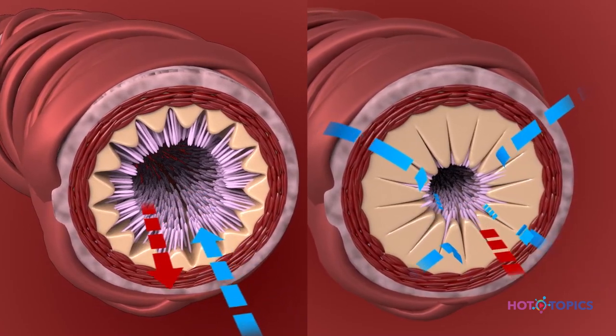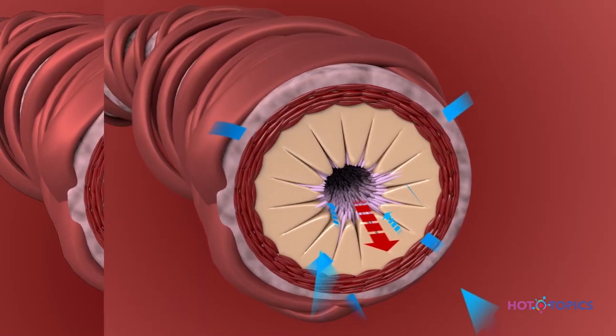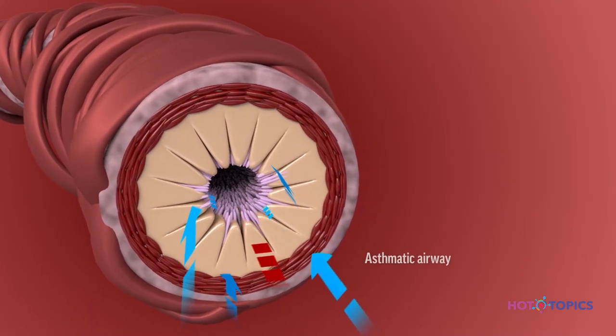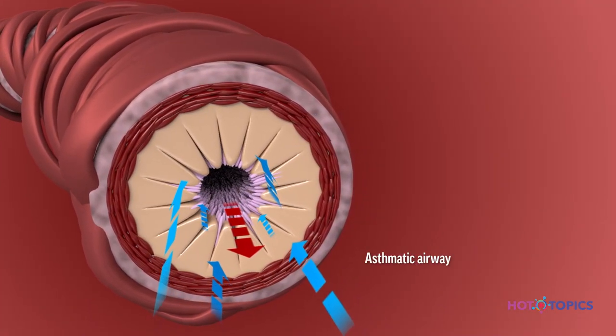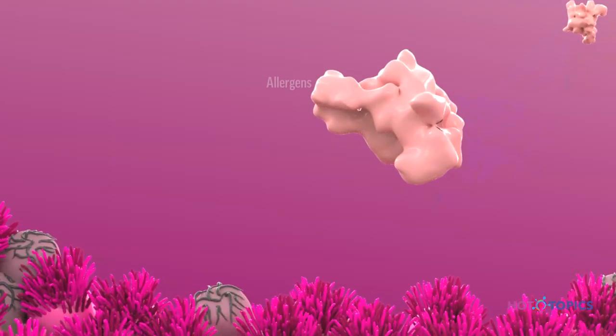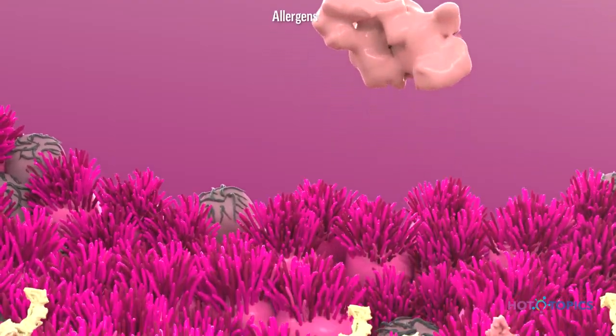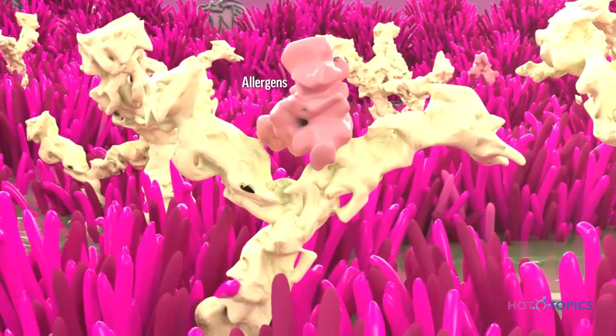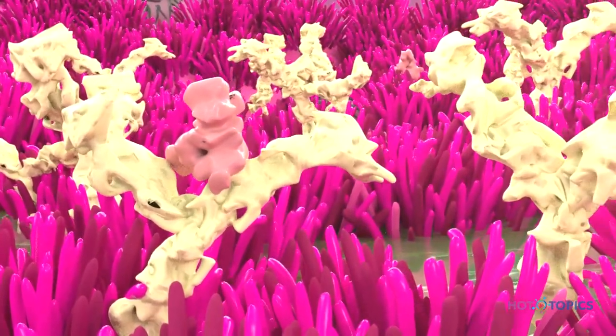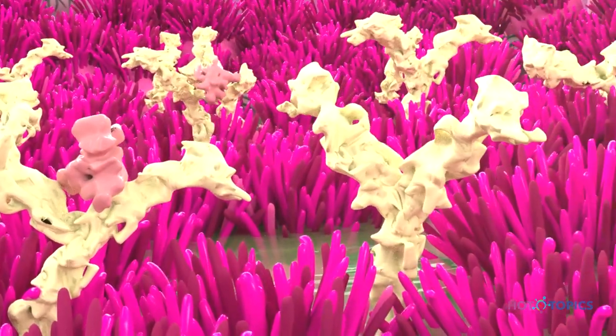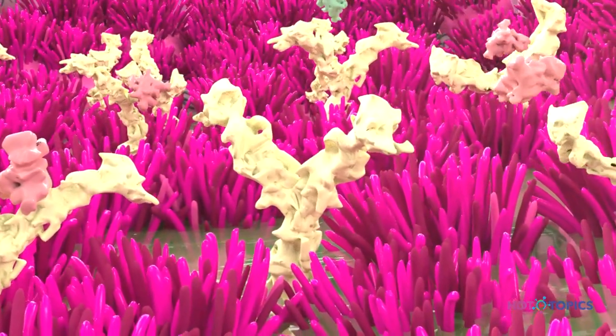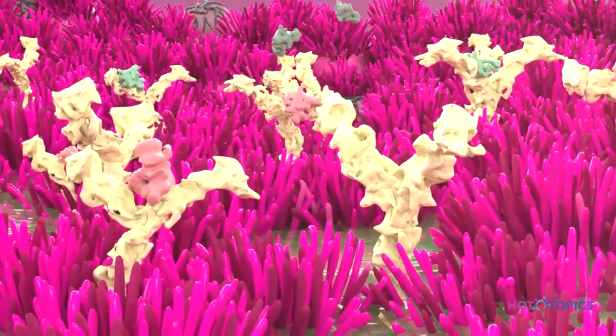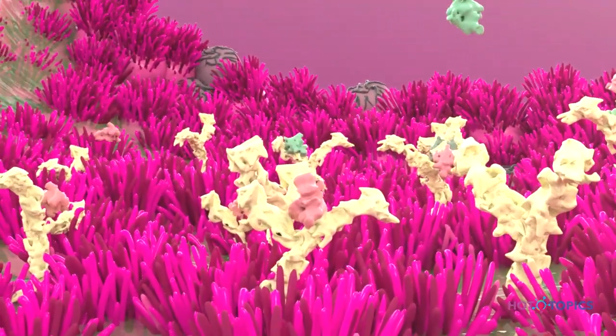To understand why individuals with asthma form mucus plugs, we need to delve deeper into the type 2 inflammatory cascade. Airway epithelial cells are not just a physical barrier between the body and the outside environment. They are also immunologically active and can mediate inflammatory responses to external triggers through receptors that respond to inhaled triggers such as allergens, pathogens, and air pollution.